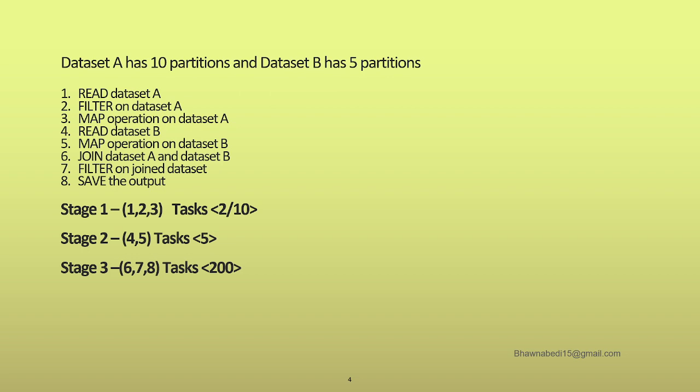To reiterate the solution: when you are reading, filtering, and mapping on the same dataset there is no shuffle involved, so you have one stage. Similarly, reading and mapping dataset B — no shuffle — becomes stage 2. The join, filter, and save involves shuffle and becomes stage 3. So you have three stages total. The number of tasks in each stage depends on the number of partitions; dataset A has 10 partitions so 10 tasks will be created at maximum.